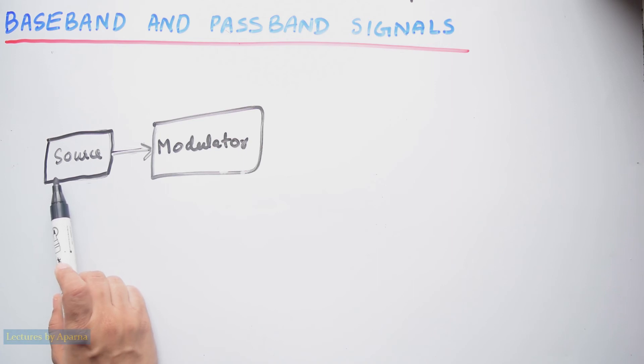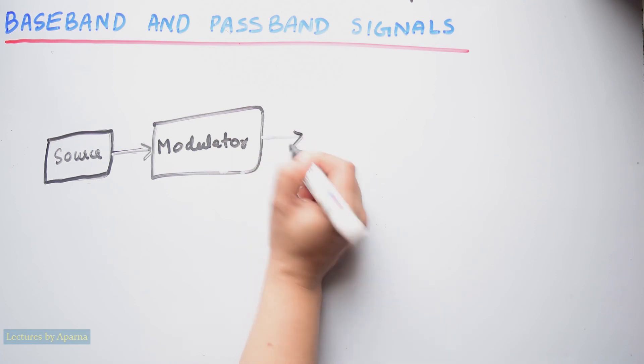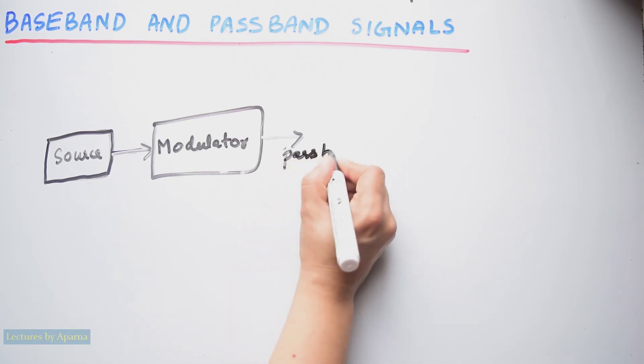Now if the message signal coming from the information source is passed through a modulator and you get a modulated signal, then that transmission is called passband transmission. And the modulated signal that you get after the process of modulation is called passband signal.